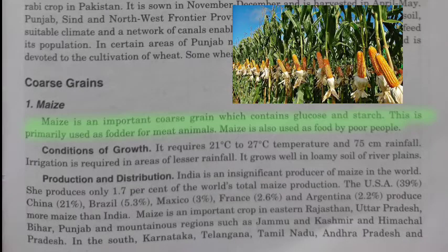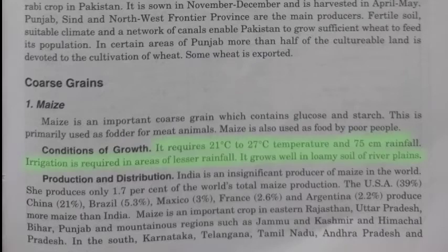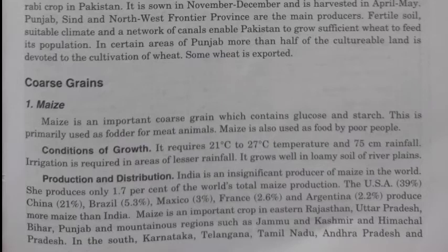The next important food crop is maize, included in the coarse grains category. It is primarily used as fodder for animals but also consumed as food by poorer populations. It requires 21 to 27 degrees Celsius of temperature and 75 centimeters of rainfall, with irrigation also required if rainfall is less. India is an insignificant producer of maize globally, ranking seventh in world production. Major producers include the USA, China, Brazil, Mexico, France, and Argentina.